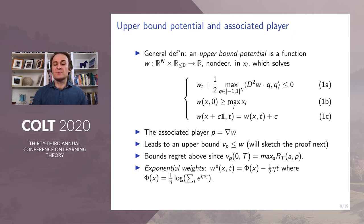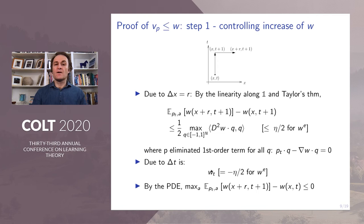For the exponential weights player strategy, the potential that satisfies our definition is given at the bottom of the slide. We prove the upper bound in two steps. In step one, we control the increase in w.